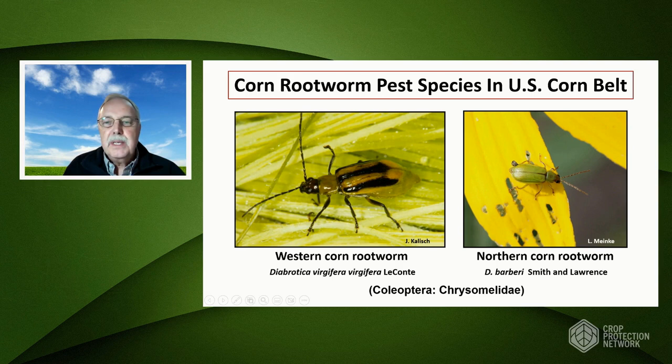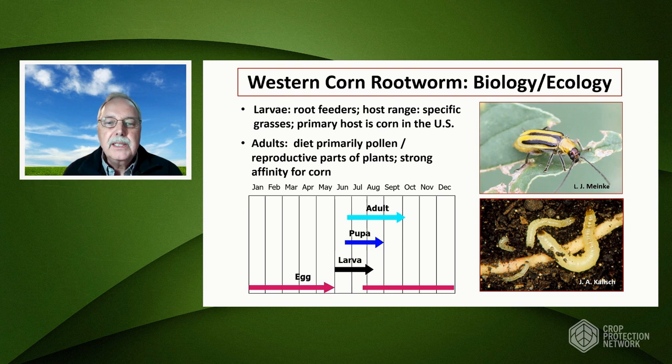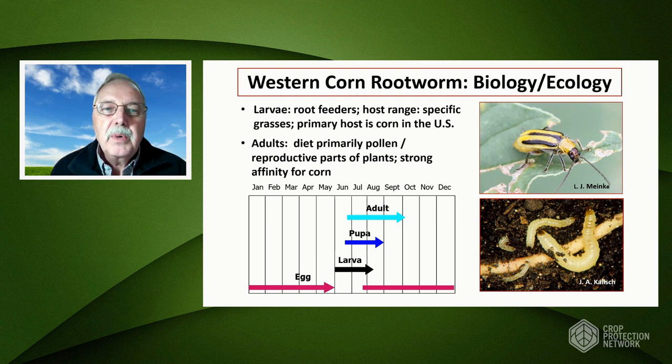The Western corn rootworm is univoltine, meaning it has one generation per year and overwinters in the egg stage. Right now, all the eggs are in the soil until next year when they will hatch. The larval stage feeds on plant roots and has a very narrow host range — it's specific to just certain grasses. Unfortunately, the primary host is corn in the United States. Adults are found above ground, are very mobile, and feed primarily on pollen and reproductive parts of plants, with a very strong affinity for corn.